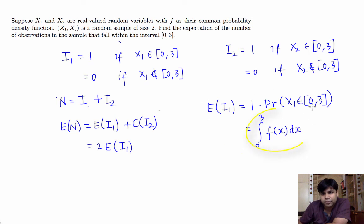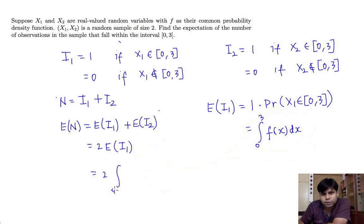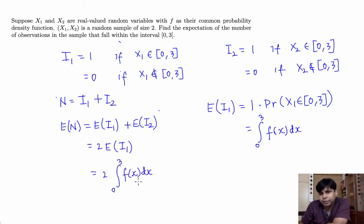Taking this expected value of i1 and plugging it in, we get the expected value of N equals 2 times the integral from 0 to 3 of f(x) dx. That's the expected value of N. Thank you.